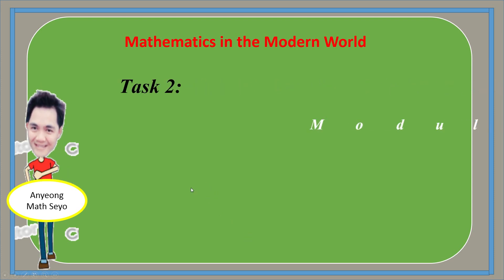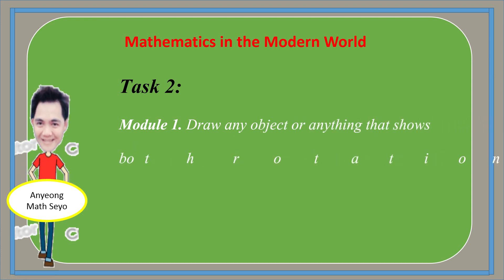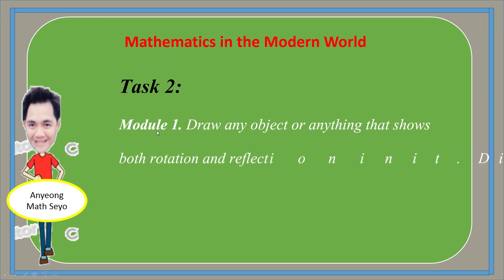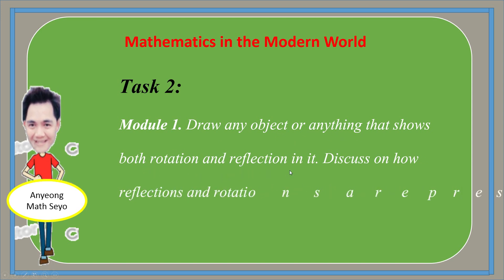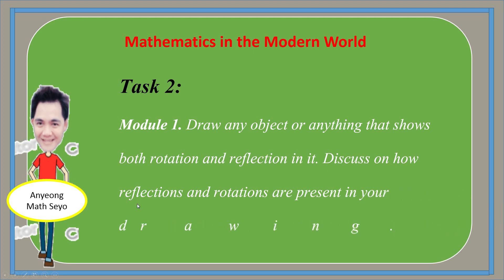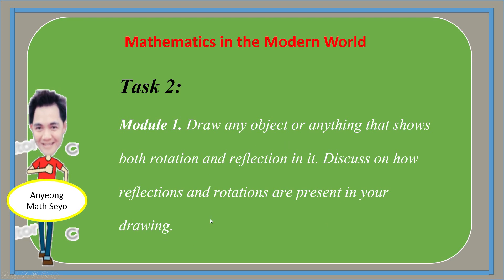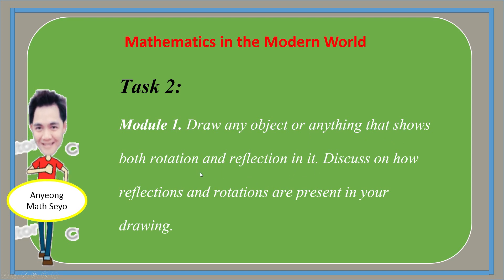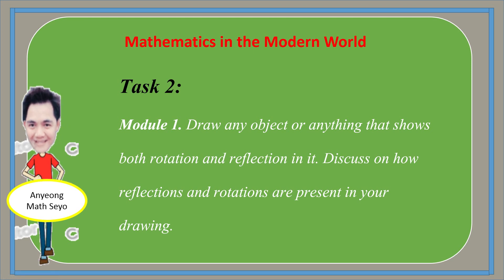For the second task, this is what you are going to pass to us as your instructors. For Module 1, draw any object or anything that shows both rotation and reflection. Discuss below the drawing how reflections and rotations are present in your drawing. Put this in a long bond paper.